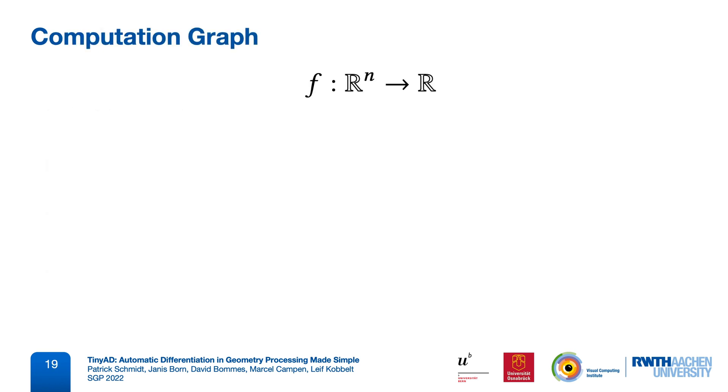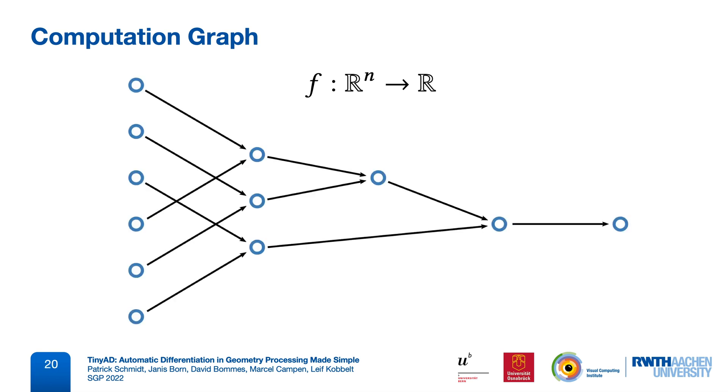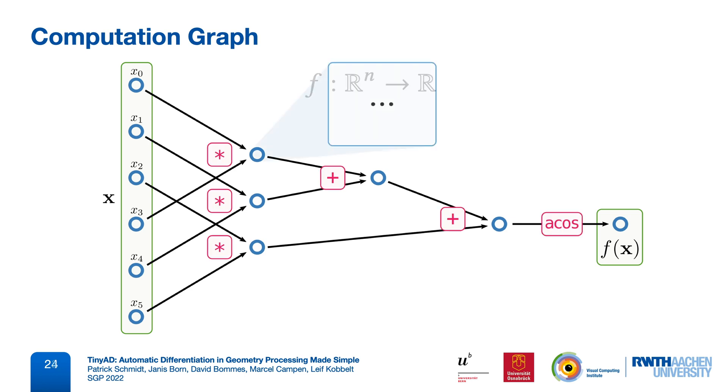Given an implementation of our objective function, we can consider its computation graph, where each node is a scalar value that exists at a certain time during program execution. There are n inputs, corresponding to our variable vector x, and one output f. The value of each intermediate node is computed from its predecessors via some operation. Now, automatic differentiation techniques attach additional information to these nodes, and then perform one or more passes through this graph to compute both f and its derivatives.